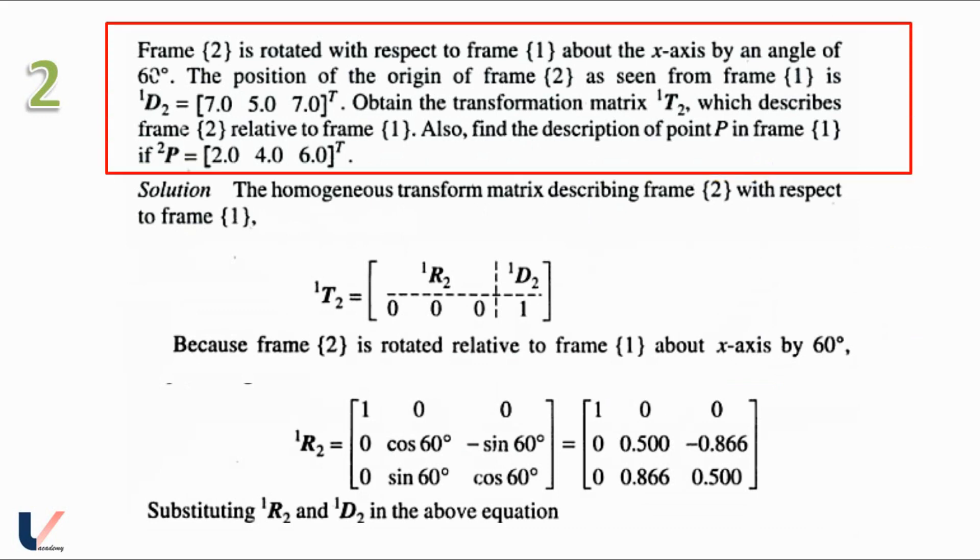It is given that frame 2 is rotated with respect to frame 1 about the x-axis by an angle of 60 degrees. The position of the origin of frame 2 as seen from frame 1 is 1D2 is equal to 7, 5, 7. We have to obtain the transformation matrix 1T2 which describes frame 2 relative to frame 1. Also we have to find the description of the point P in frame 1 and the value of 2P is given as 2, 4 and 6.